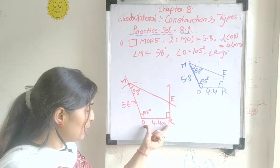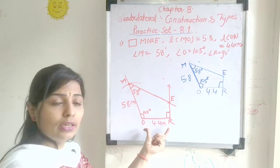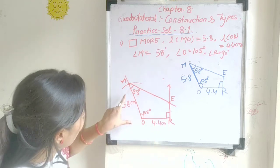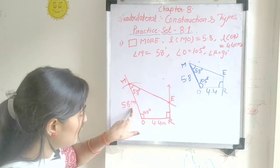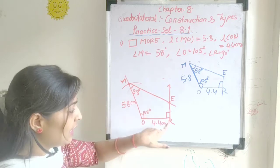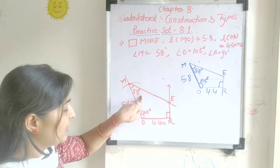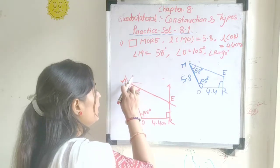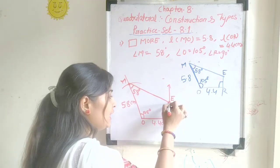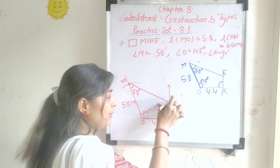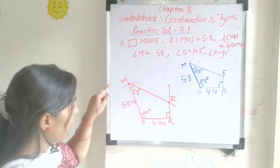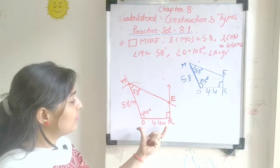So this is the way we have drawn the quadrilateral MORE. To summarize: length of OR is 4.4 cm, length of MO is 5.8 cm, angle O is 105 degrees, angle R is 90 degrees, and angle M is 58 degrees. The intersection of the lines from M and R gives us point E. This completes question number 1.